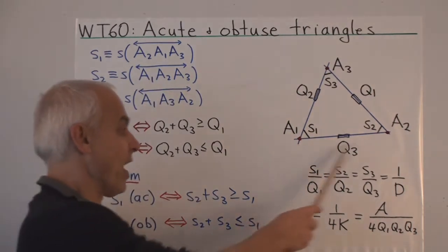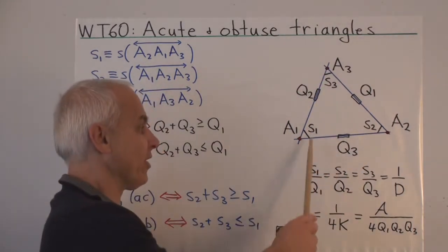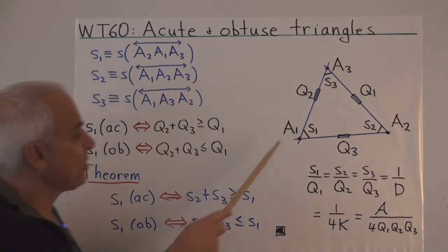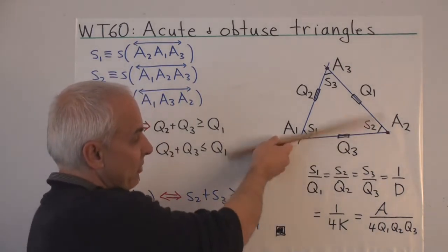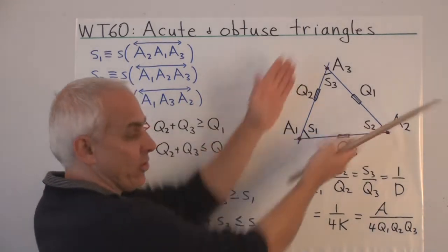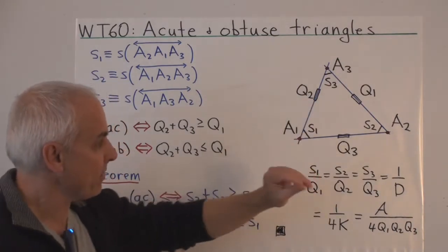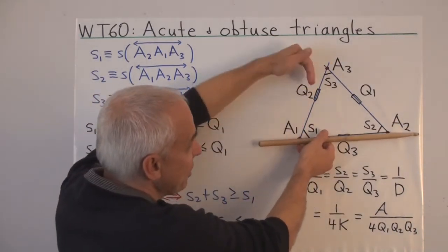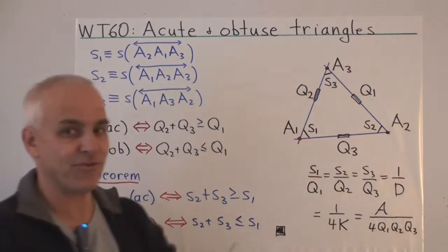Here's a standard triangle as usual with its three quadrances and its three spreads. We'll also say that this spread S1 is not just the spread between those two lines, but it's also the spread of the sector determined by those two lines and the interior of the triangle — that region of the plane which is between those two lines and on this side containing the triangle.